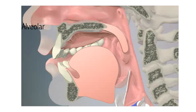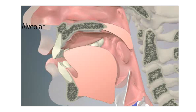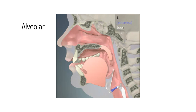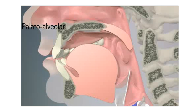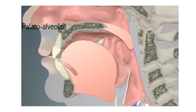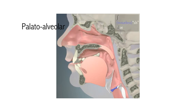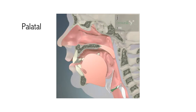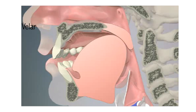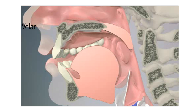Alveolar: the tip or blade of the tongue makes contact with the alveolar ridge, as in the first sound of 'tip.' Palatoalveolar: the blade of the tongue makes contact with the area just behind the alveolar ridge, as in the first sound of 'sheep.' Palatal: the front of the tongue pushes up against the palate, as in the first sound of 'yes.' Velar: the back of the tongue makes contact with the velum, as in the first sound of 'cat.'